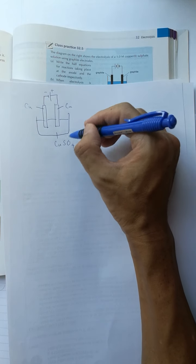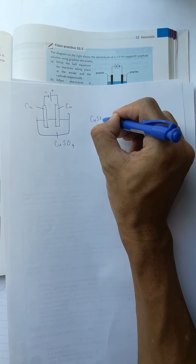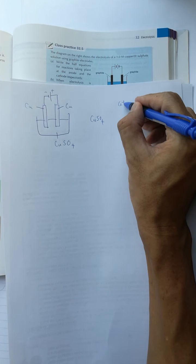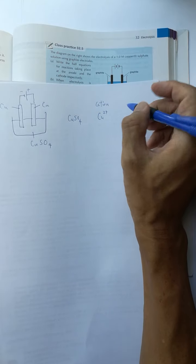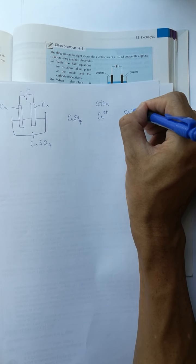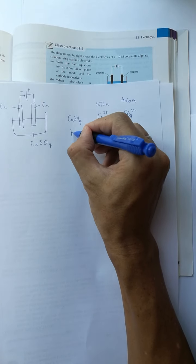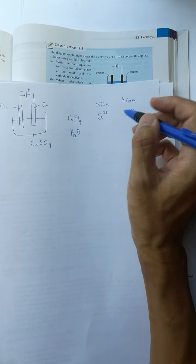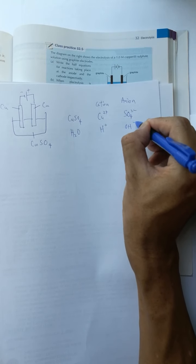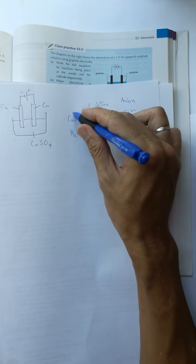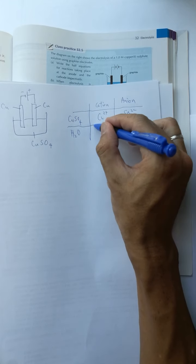For the copper sulfate solution, it provides ions: copper-2 and sulfate. The solution also contains water, which undergoes ionization to give equal numbers of hydrogen ions and hydroxide ions.